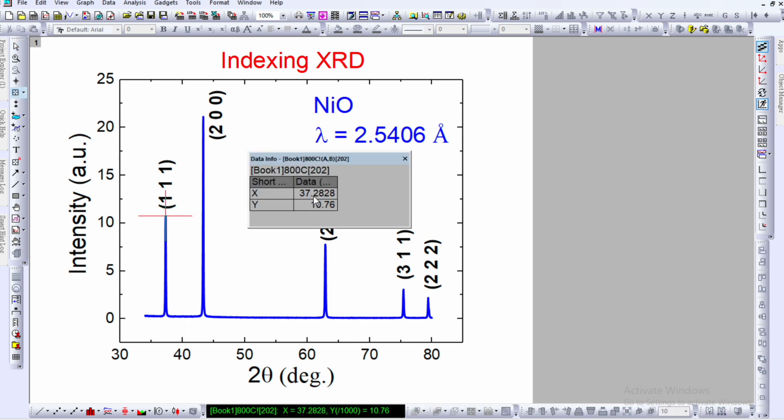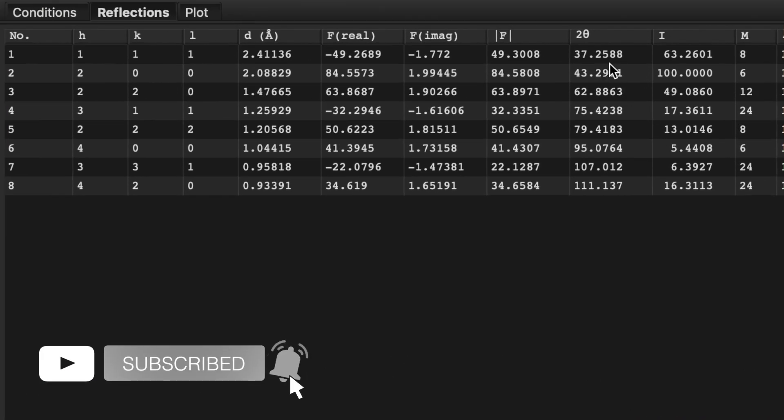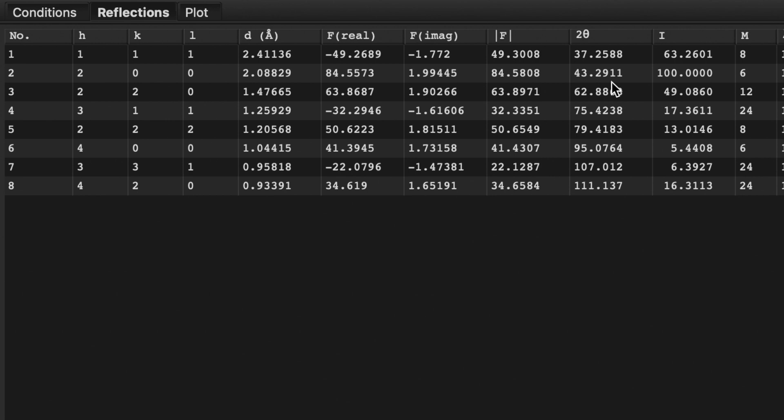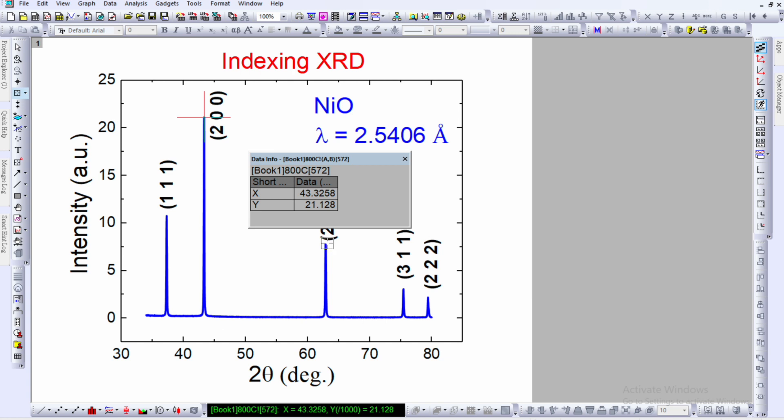This value is 37.282 degrees. This value is 43.3258 degrees. Let's go back to the table. This is 37.25—that's 111 plane. That is 43.29—that's 200 plane. It's the same.